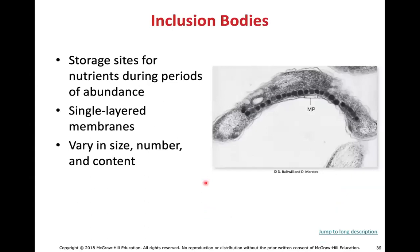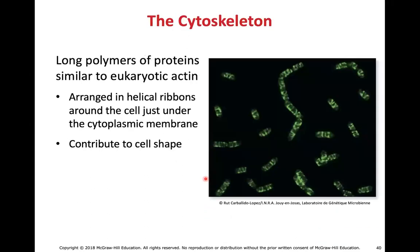Inclusion bodies are storage sites for nutrients during periods of abundance — the analogous structure in a eukaryotic cell would be a vacuole. These are not separate structures but simply areas within the cytoplasm where various things are stored. The cytoskeleton is the framework of the cell, typically made up of protein subunits. In prokaryotes it is much less dynamic than in eukaryotes — you won't really see cell shape changes in prokaryotic cells the way you might in eukaryotic cells.